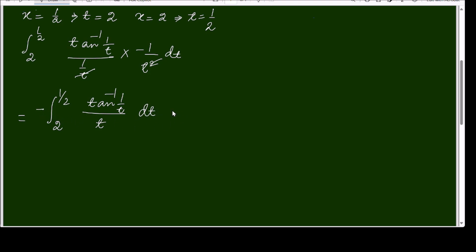There is a negative sign here, so again I am using the property. I will remove this negative by changing this limit, so it will be again half to 2. Tan inverse 1 by t can be written as cot inverse t over t dt.